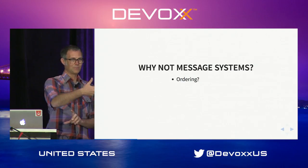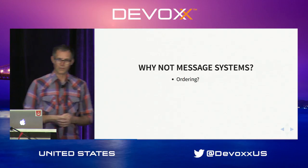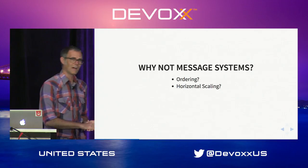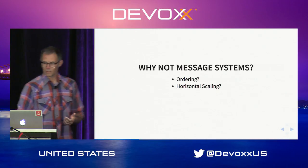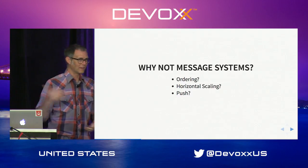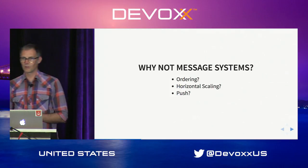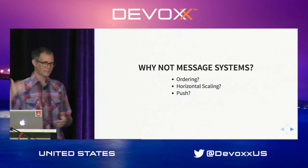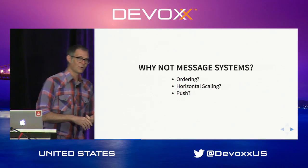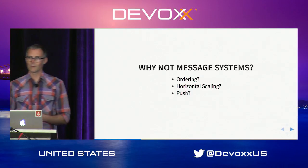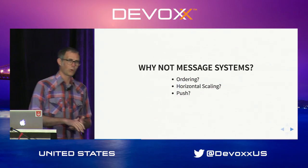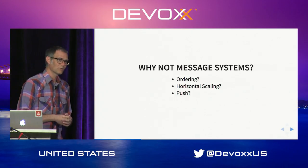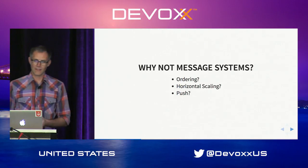If we get a create event after the update event, that's not going to make any sense, so we really need to make sure ordering is guaranteed. Can we horizontally scale our messaging system? Maybe, maybe not — that can be a challenge. Is push the right way to do things? It might be, might not be. With push, what if we have different speed consumers? One processes things really fast, another really slow. How do we do back pressure — the reactive programming concept? With push it's actually pretty hard. Pull is a much better way to apply back pressure. Those are some reasons why a messaging system may not fit as that data store we want.